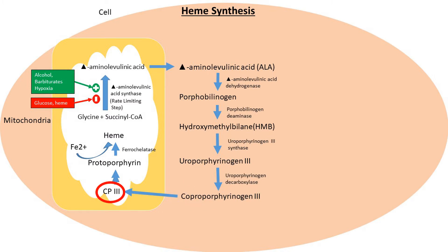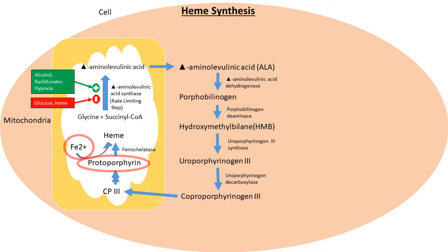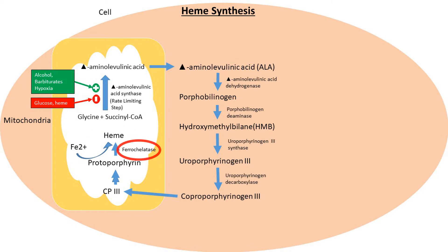CP3 eventually gets converted into protoporphyrin. Finally, protoporphyrin combines with iron to form heme in the presence of the enzyme ferrochelatase, finishing the cycle of heme synthesis.